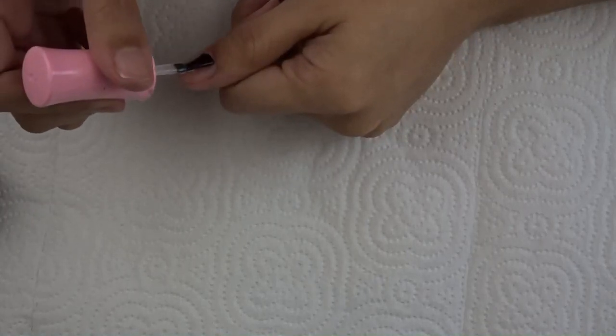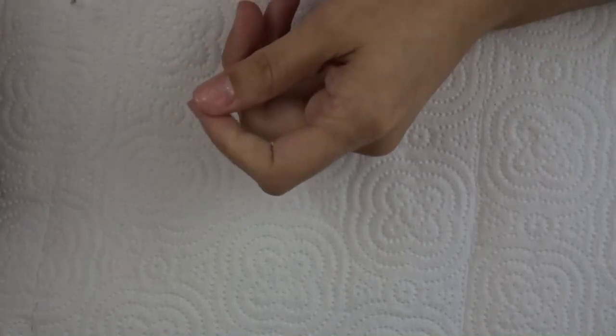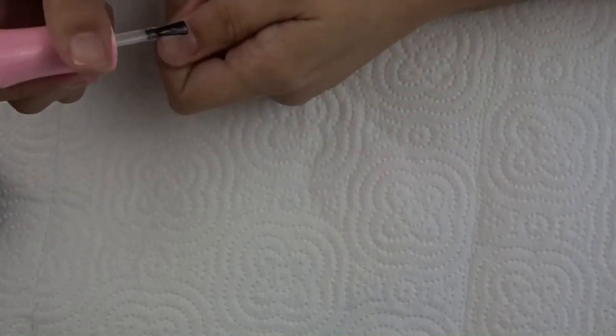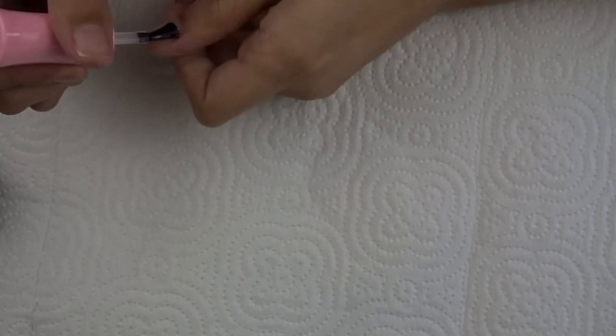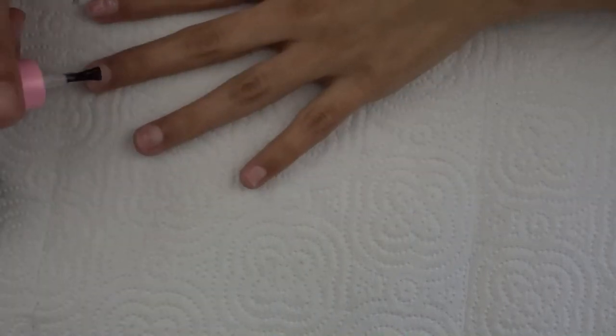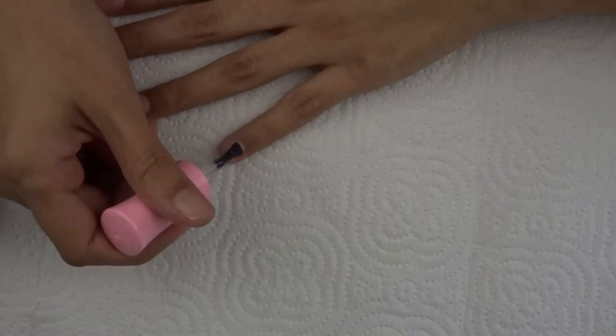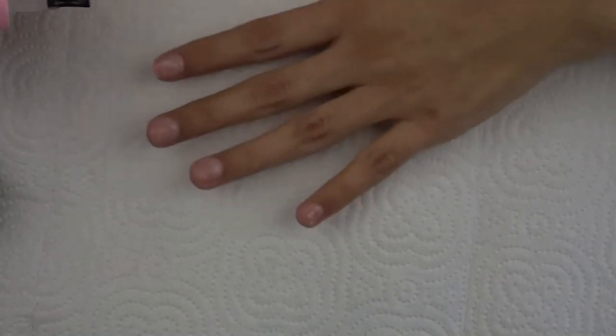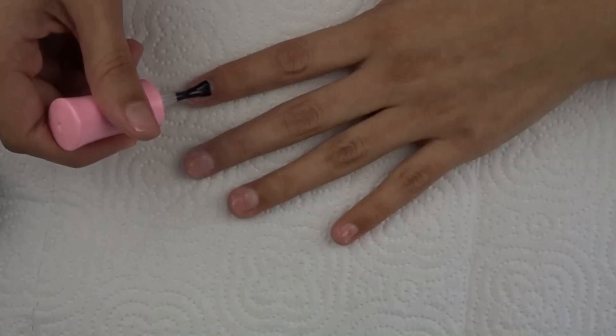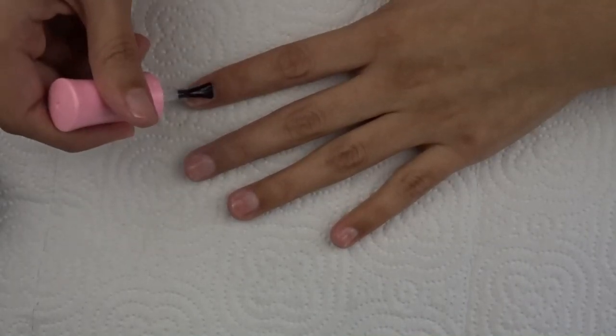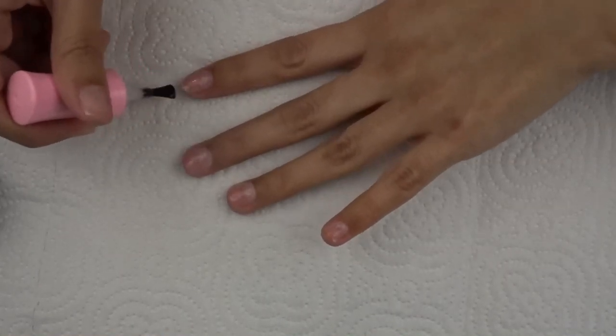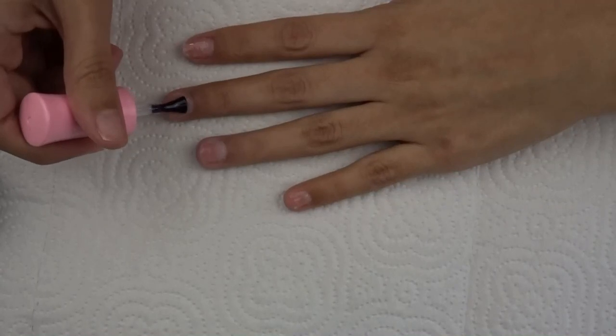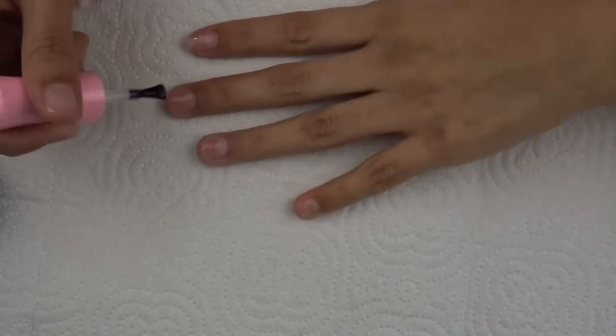Here I'm just going to do very thin coats of the Emelle Couture base coat. Now disclaimer, for The Gel Bottle builder gel, you don't need any type of base, but I always put a base on my nails because I know myself, I'm very hard on my hands and I just don't want to have to deal with any lifting just in case. So I do put a base, but like I said, you don't need it when it comes to The Gel Bottle clear builder gel. I rarely would put any base on my clients and I've never had an issue unless I knew they were nail biters or they were very hard on their hands.